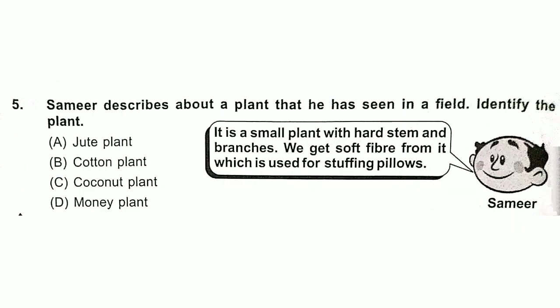Question 5: Swami describes a plant that he has seen in a field. Identify the plant. It is a small plant with a hard stem and branches. We get soft fiber from it which is used for stuffing pillows. Answer is option B.